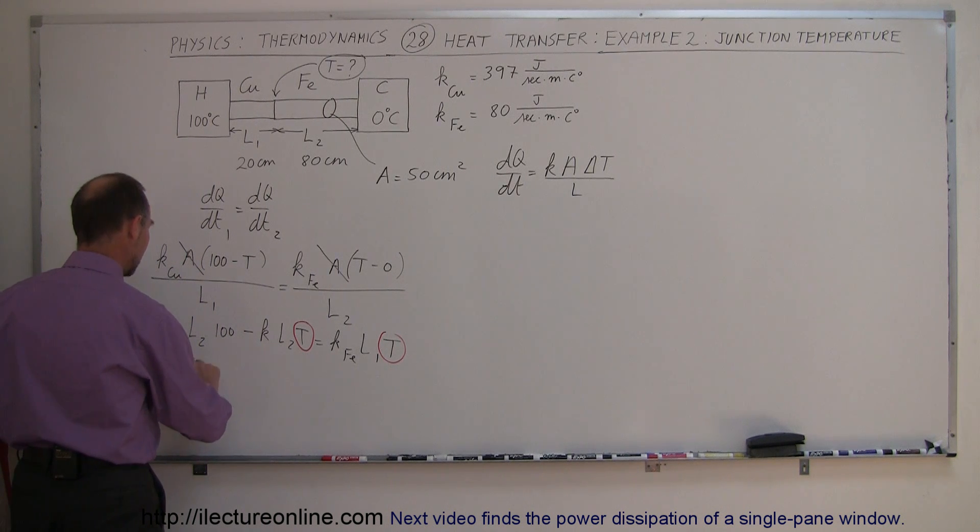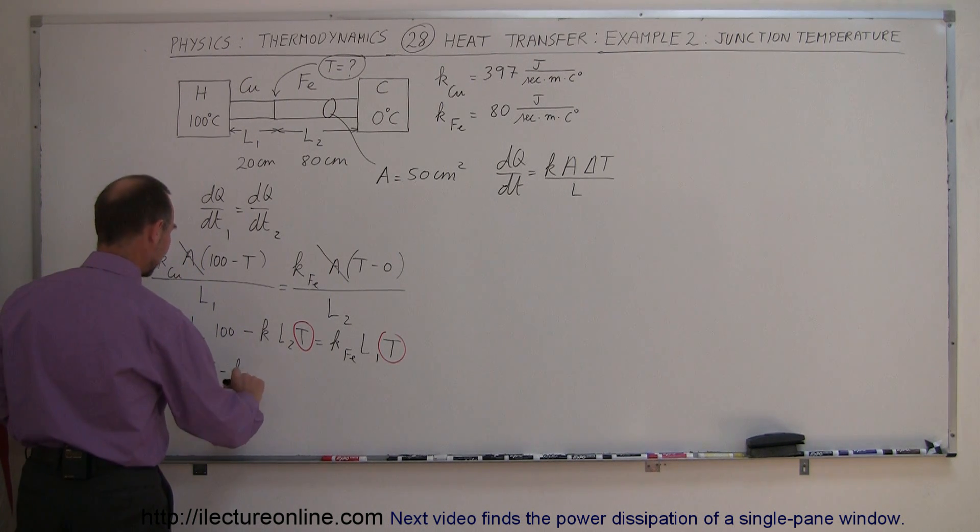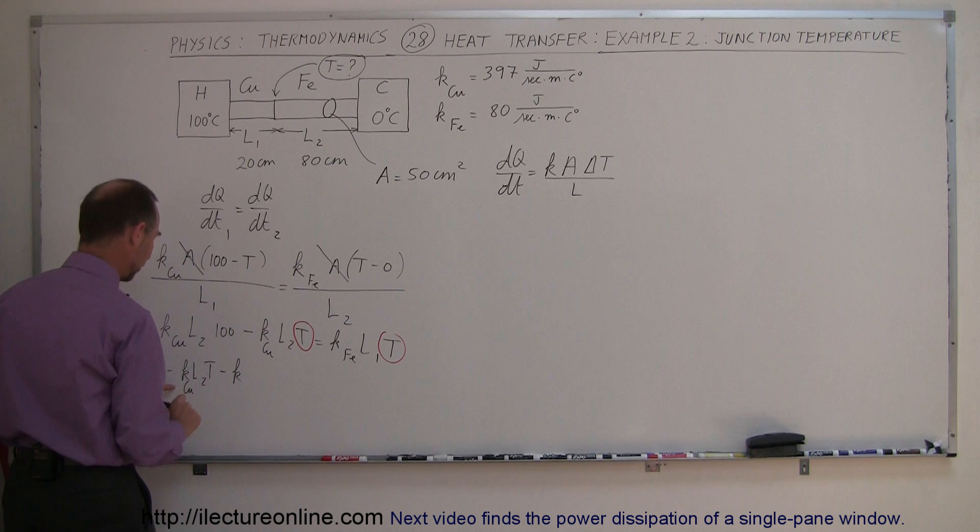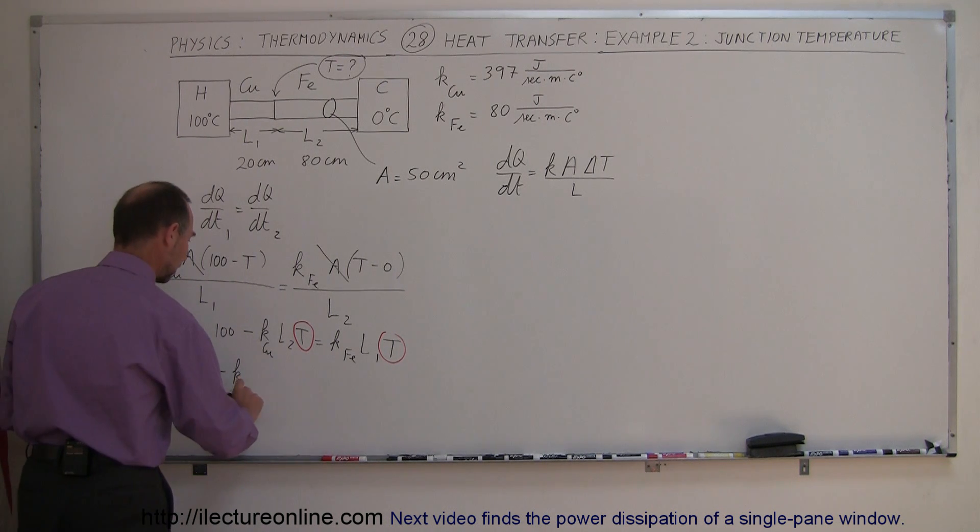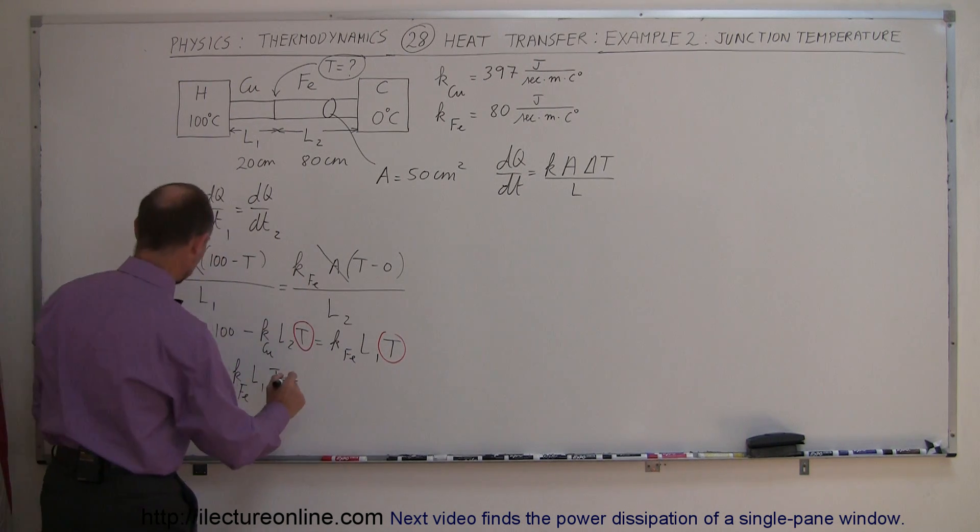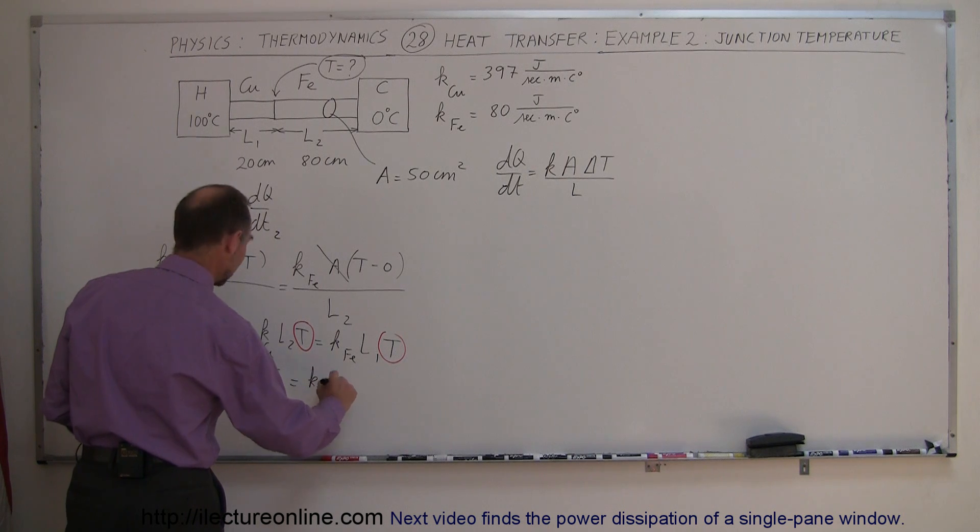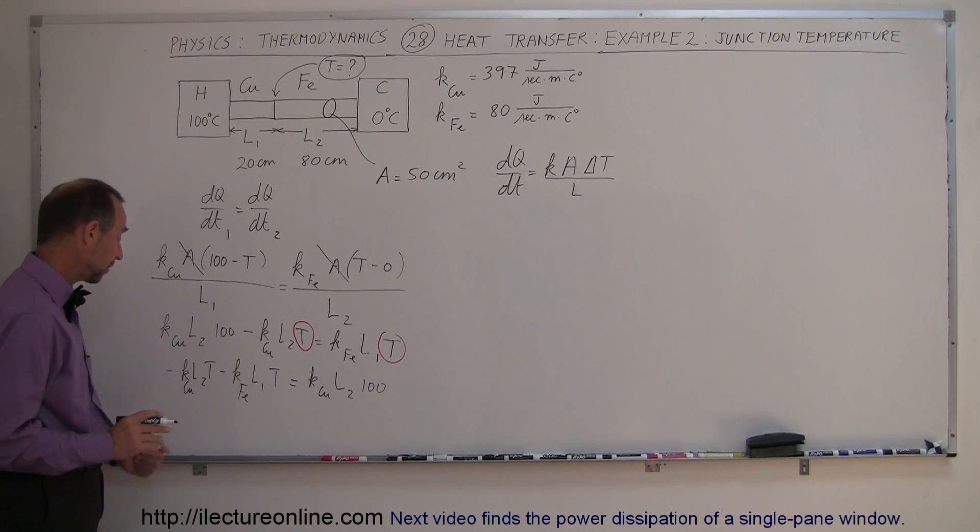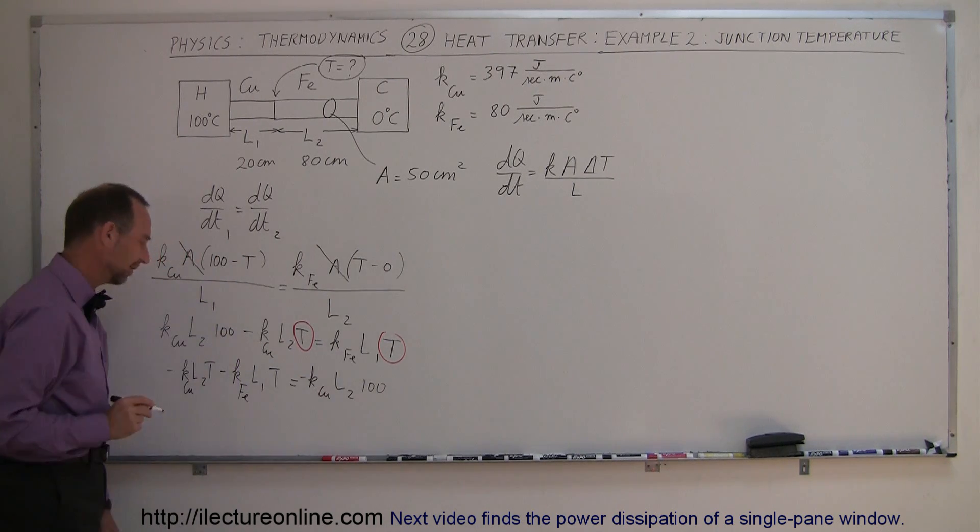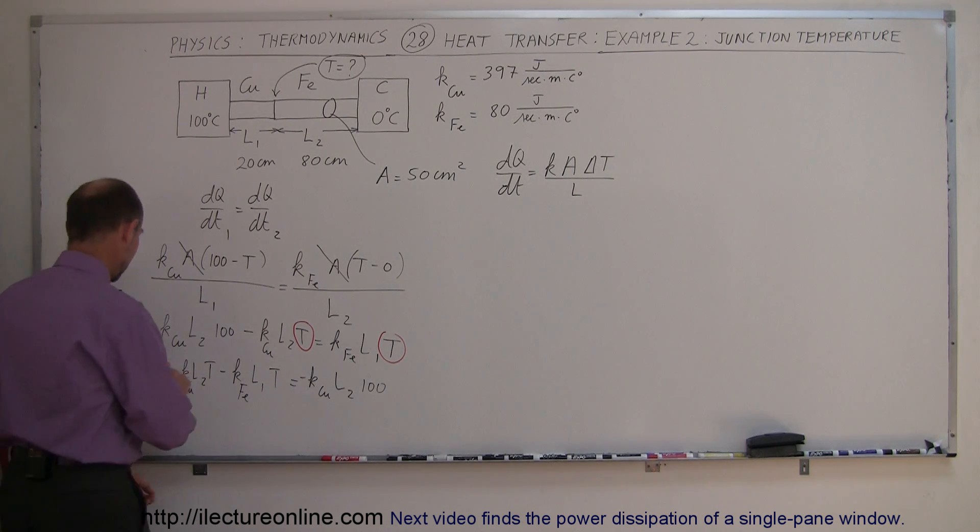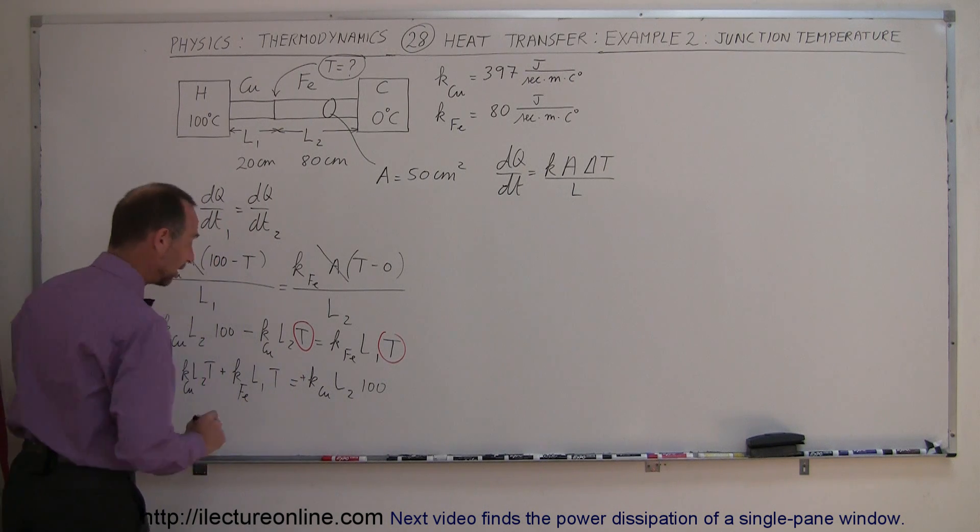That means I have minus K L2 T. This K right here is the K of the copper, the conductivity of copper. This K here is the conductivity of the iron times L1 times T equals K of the copper times L2 times 100. Now I have two negatives here. When I move this over there, I have a negative over there. So I have negatives everywhere, which means I can probably just multiply both sides of the equation by negative one. That makes it a positive, a positive, and a positive. Makes it a little bit easier to work with.